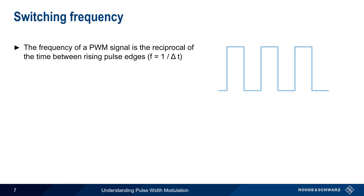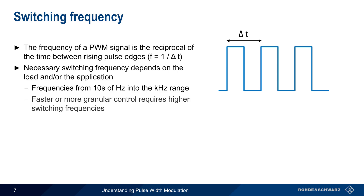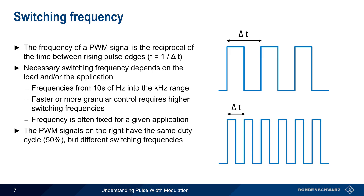The other pulse width modulation parameter is the switching frequency, which can be defined as the reciprocal of the time between the rising edges of the voltage pulses. The necessary switching frequency depends on the load or on the application, with frequency ranging from the tens of hertz all the way into the high kilohertz range. Generally speaking, applications that require faster or more granular control will require higher switching frequencies. But note that in most applications, the switching frequency is fixed at a certain value. Note that the example waveforms shown on the right both have the same duty cycle of 50%, but have different switching frequencies — the waveform on the bottom having a switching frequency that is twice that of the waveform above it.